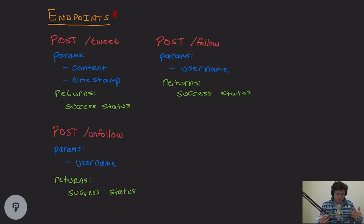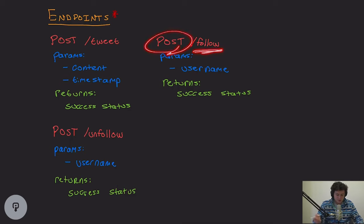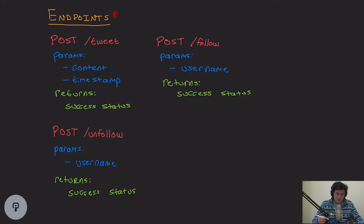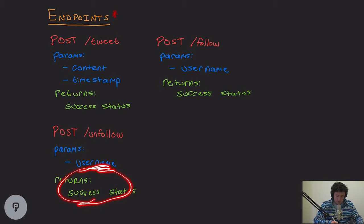In order to see tweets of people, we want to be able to follow them. The follow endpoint is going to be a POST because we're modifying data — we'll provide the username of the user we want to follow and return whether it's successful, like whether I've already followed this person. Unfollow follows the same kind of guidelines: you can unfollow somebody by their username and we'll return whether you successfully did it.